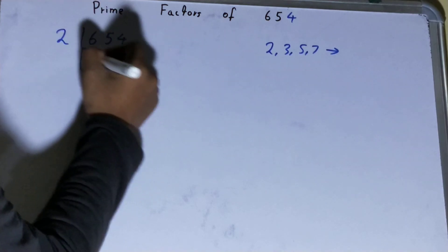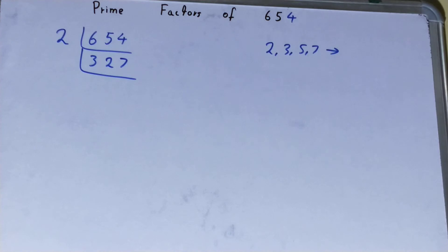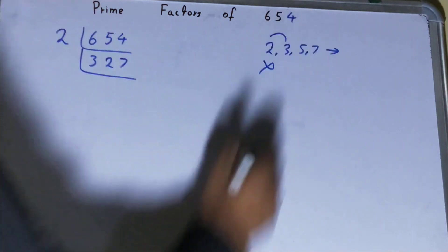Now, is this 327 further divisible by two? The answer is no, it is an odd number. So what we'll do is go to the next lowest prime number.